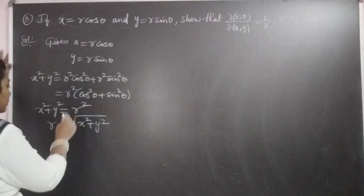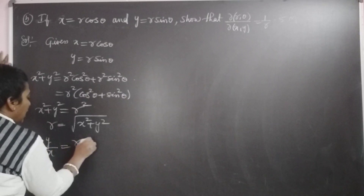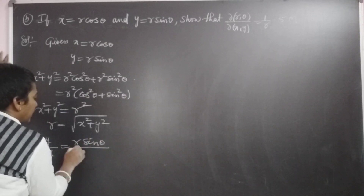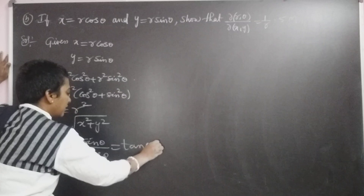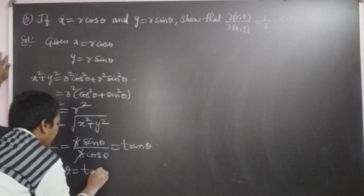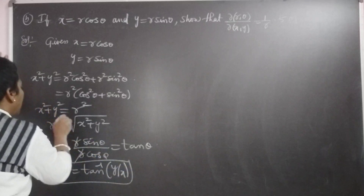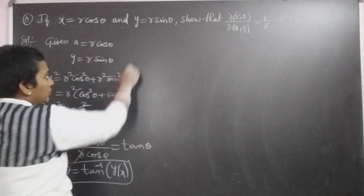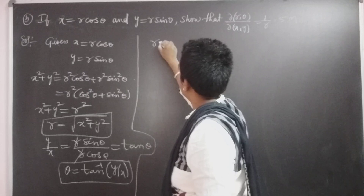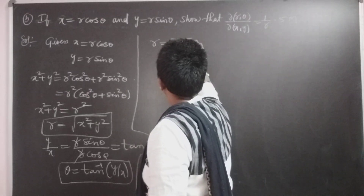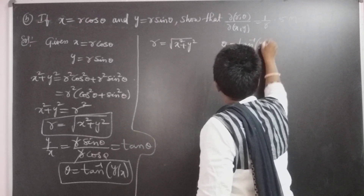Similarly, we can find out theta. That is, y/x equal to r sinθ / r cosθ, r cancels, it is equal to tan θ. From this, theta equal to tan inverse of y by x. This is the theta and this is the r. When we know r and theta, it is easy to differentiate with respect to x and y. r equal to √(x² + y²), theta equal to tan⁻¹(y/x).